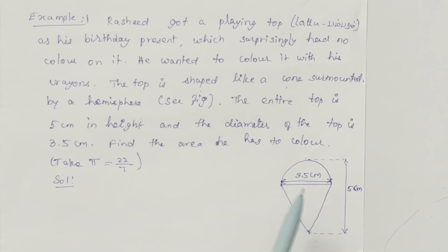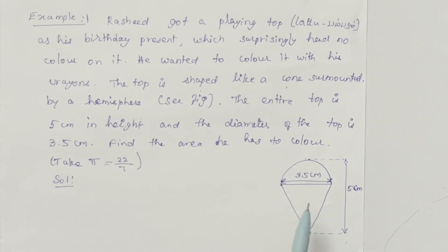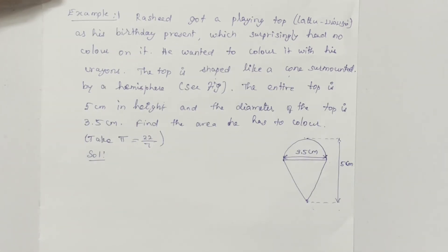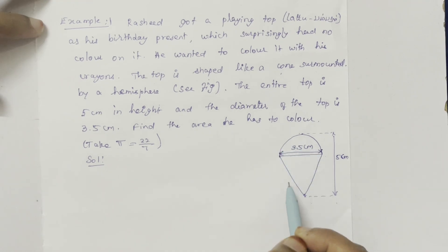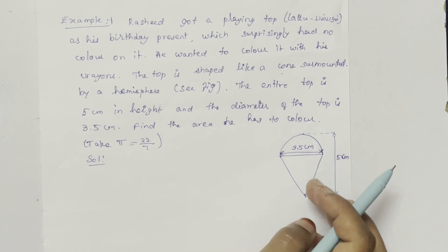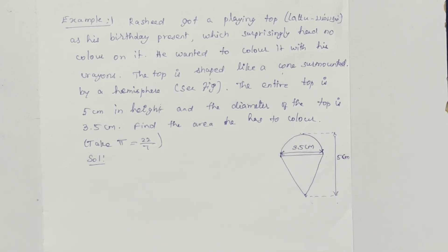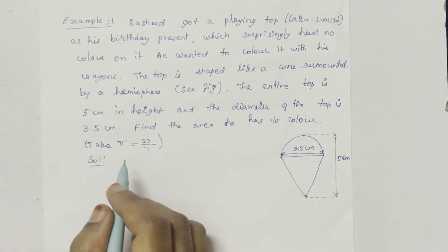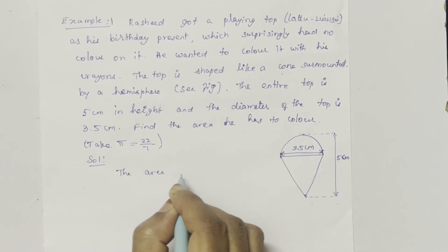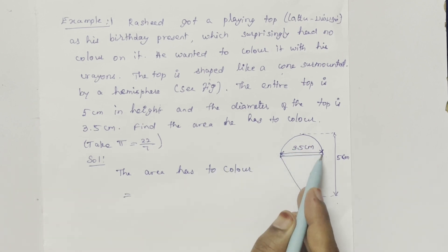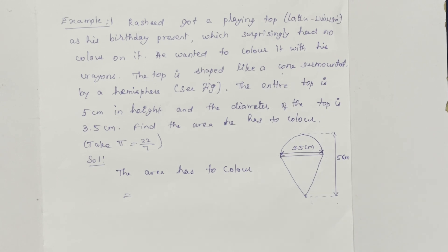The height is 5 cm and the diameter is 3.5 cm. Find the area he has to colour. The outer side to colour is the curved surface area of the hemisphere plus the curved surface area of the cone. The total area he has to colour equals the curved surface area of the hemisphere plus the curved surface area of the cone.